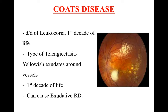In Coats' disease, there are more blood vessels and more exudates around the blood vessels. Also remember that in Coats' disease, in the later stage, you can get exudative retinal detachment.